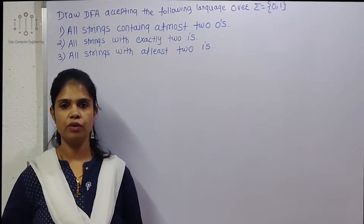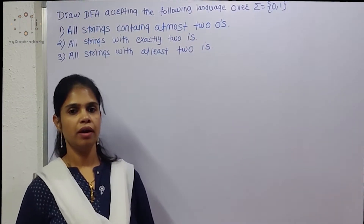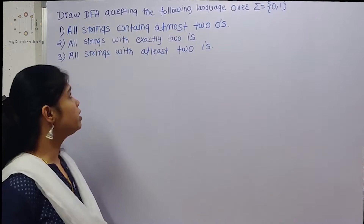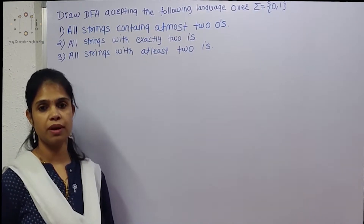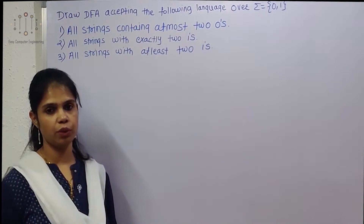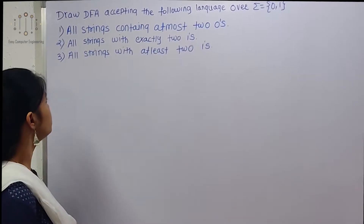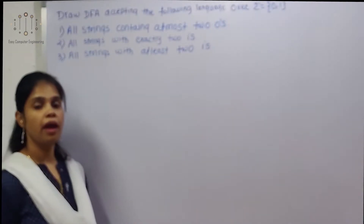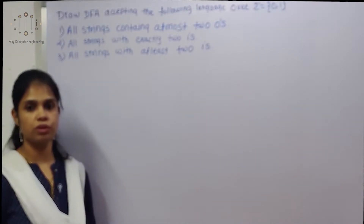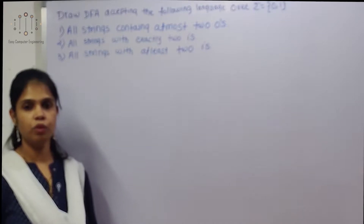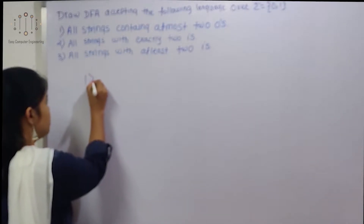Hello friends. In this video we will see how to design a DFA over sigma equal to {0, 1}. The first example is all strings containing at most two zeros.